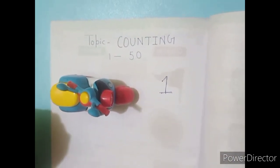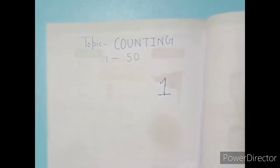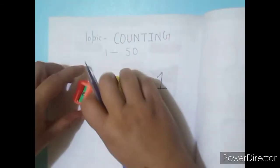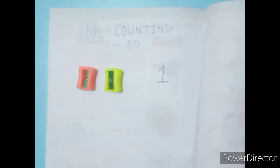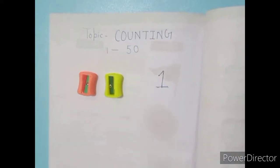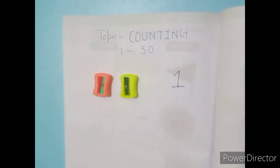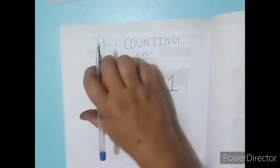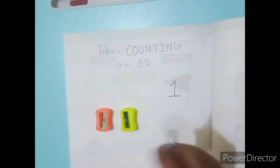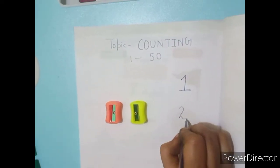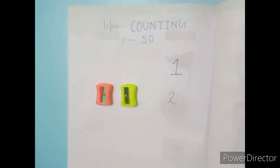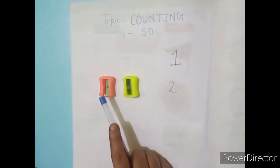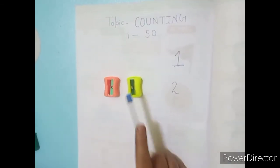Your next thing is — look here — a sharpener. How many sharpeners are here? Two. Count it: one, two.